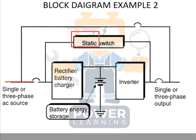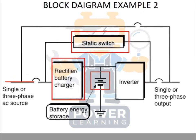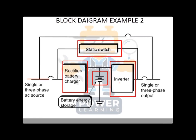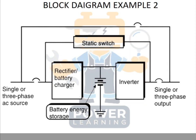All blocks in the UPS diagram are labeled: static switch, rectifier, battery, and inverter, which converts DC back to AC. You can also represent the battery as a simple box with the label 'battery.' Whenever you have an idea or are explaining something to someone, you can make a block diagram to show the plan and workflow step by step.